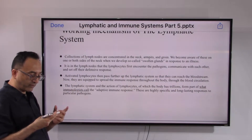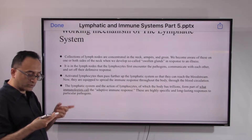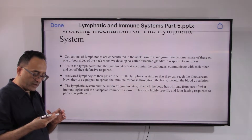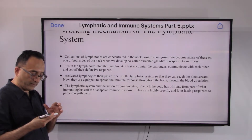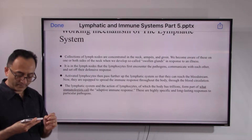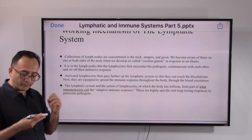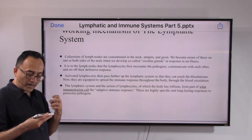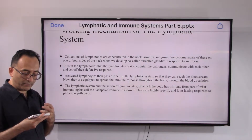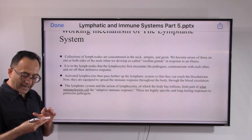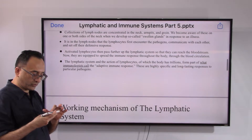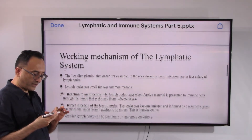Now equipped with the entire circulatory system, lymphocytes spread the immune response throughout the body via blood circulation. The lymphatic system and the action of lymphocytes — of which the body has trillions — form part of what immunologists call the adaptive immune response. These are highly specific and long-lasting responses that can be created to target a particular pathogen.